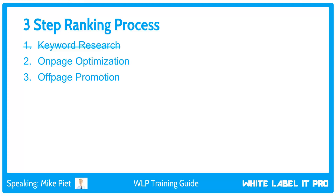For the sake of this training, we've moved on from keyword research and are now going to the second step of the ranking formula: on-page optimization. This means making sure the content is created, in place, and optimized correctly for both humans and search engines — letting Google know the content is relevant. Google always wants to rank the most relevant searches so the user says 'this is exactly what I was looking for,' has a good experience, comes back, and Google makes money.